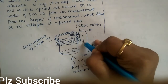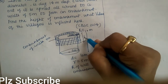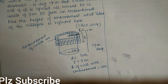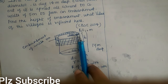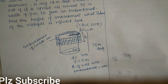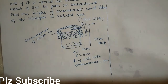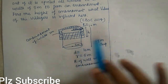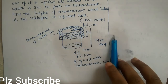Overall, what is given: we dug a well 40 meter deep, the earth taken out was used to form an embankment of width 5 meter, and we need to find the height of this embankment. So first, we will find out how much earth was taken out from the well.